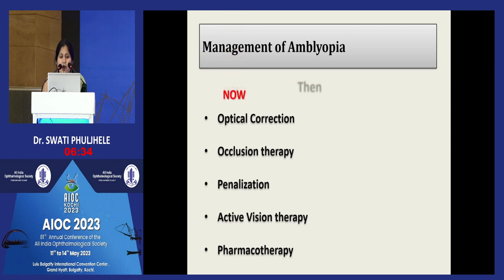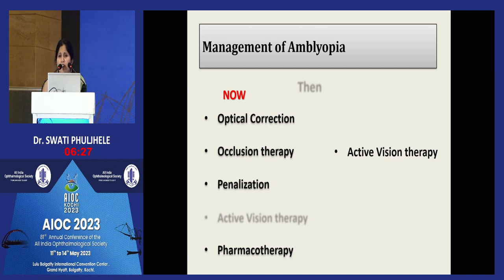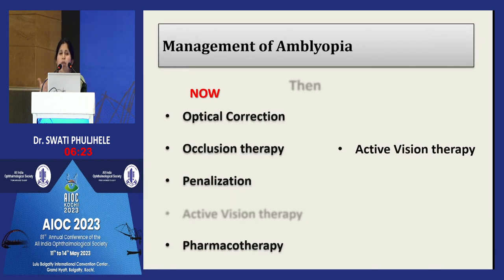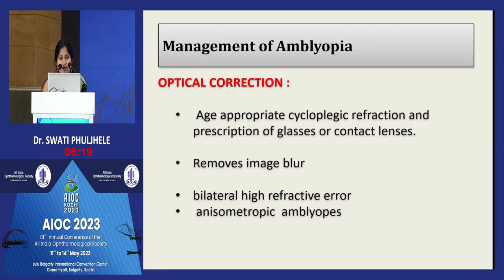Active vision therapy has emerged as a more commonly used approach. Optimal optical correction can never be overemphasized — it is the first step of amblyopia therapy, removing image blur and providing a sharp image for retinal stimulation. We now have national consensus guidelines published by AIS in IJO specifying the amount of refractive error requiring correction, readily available online.